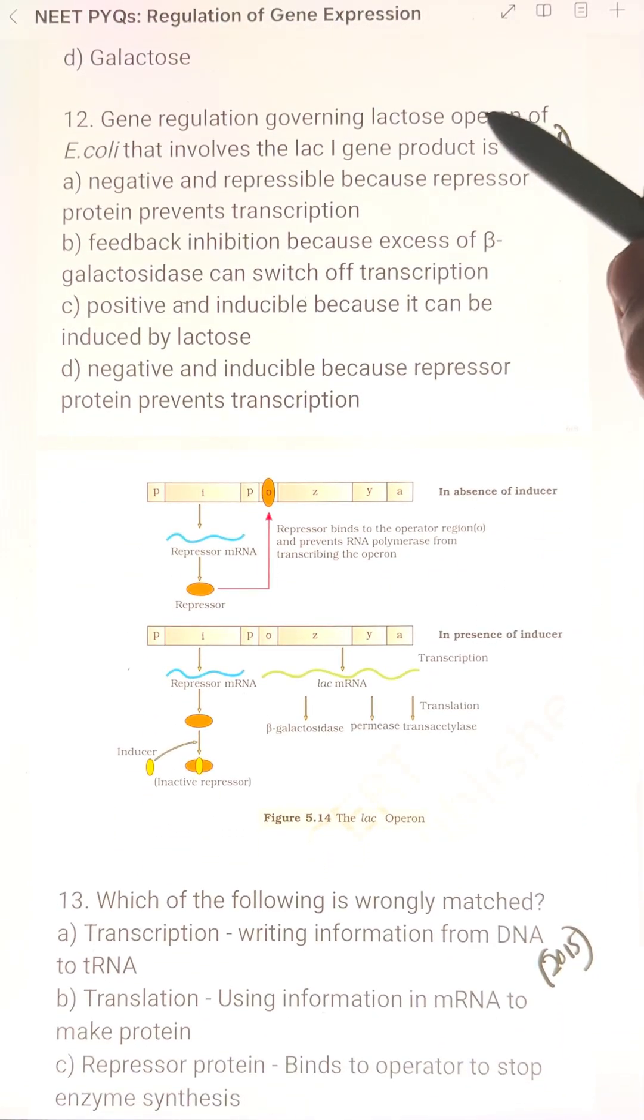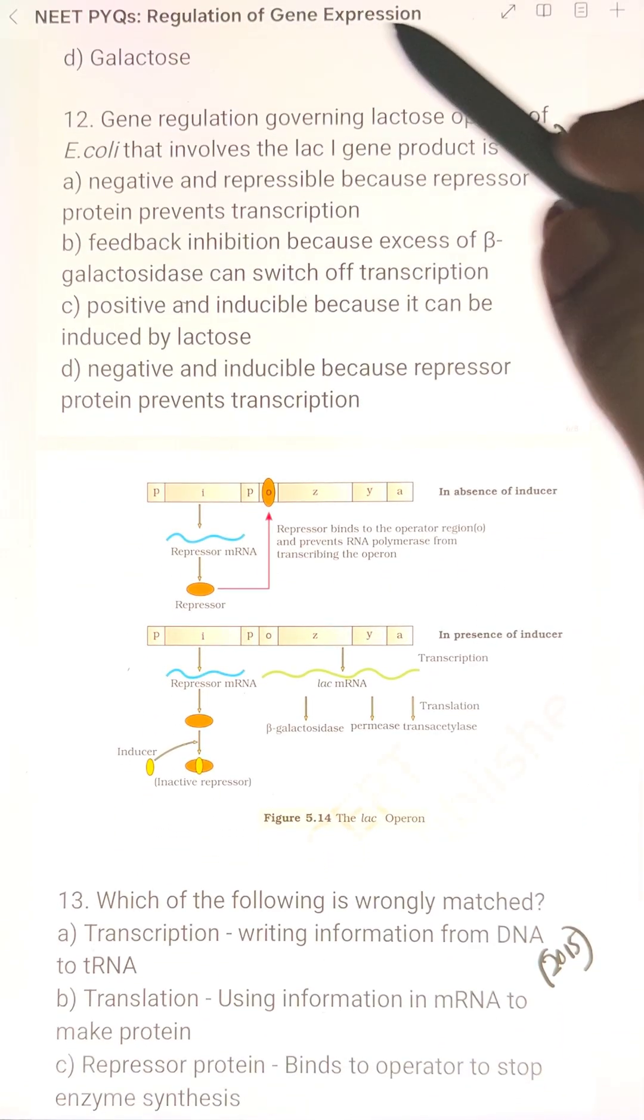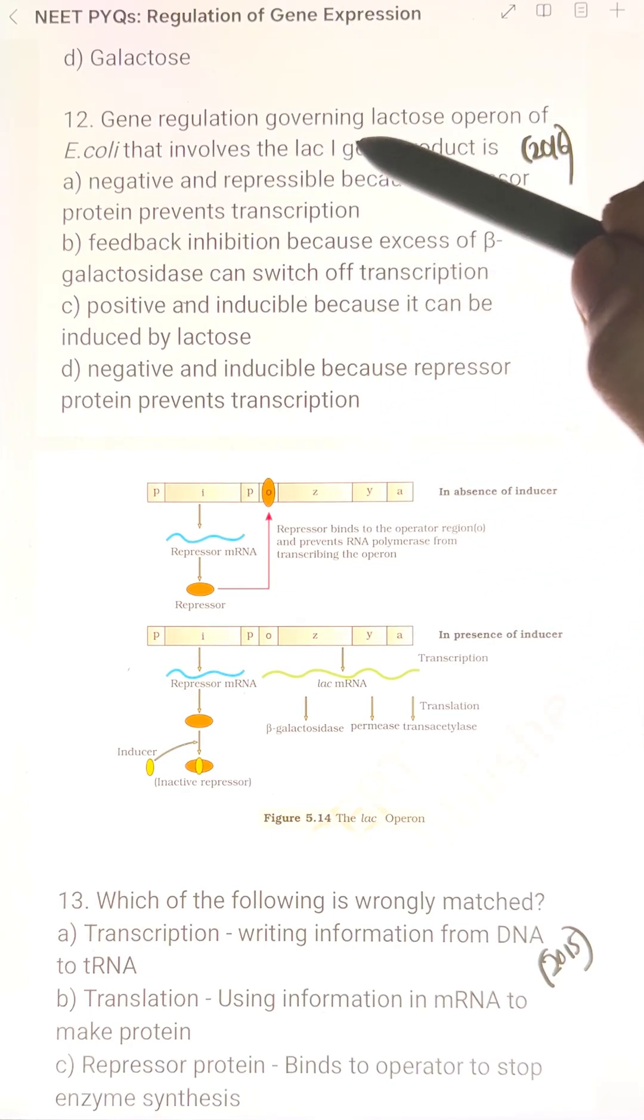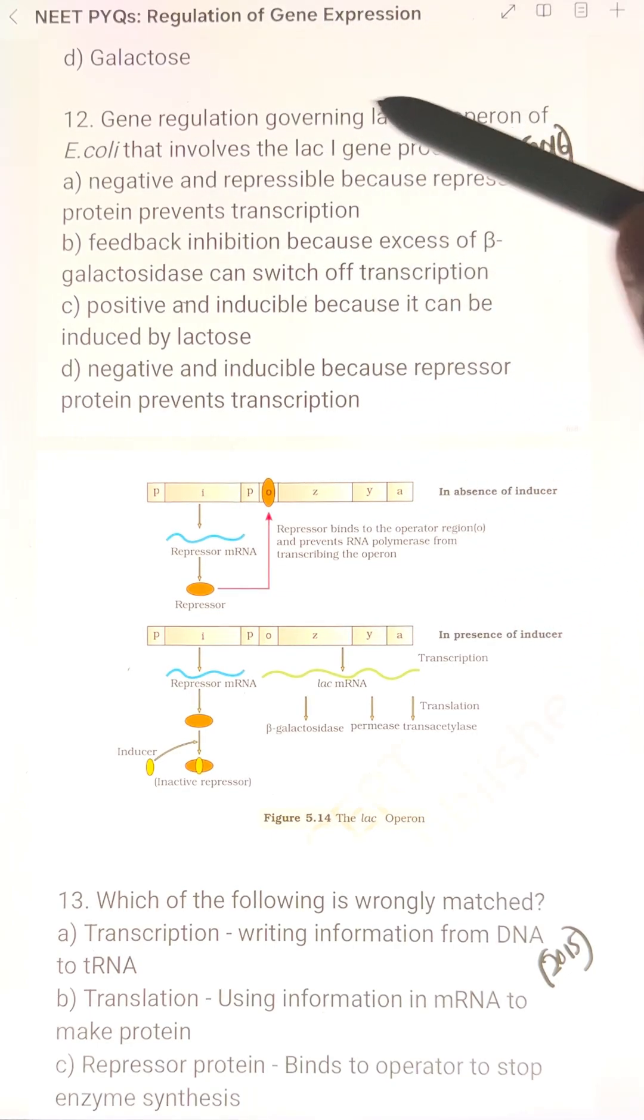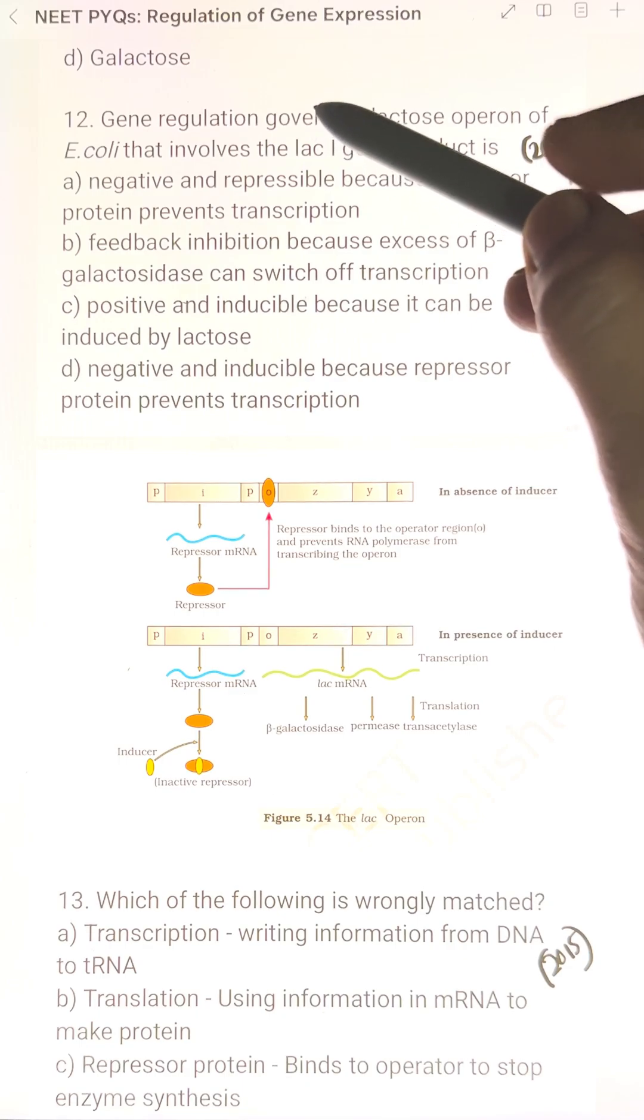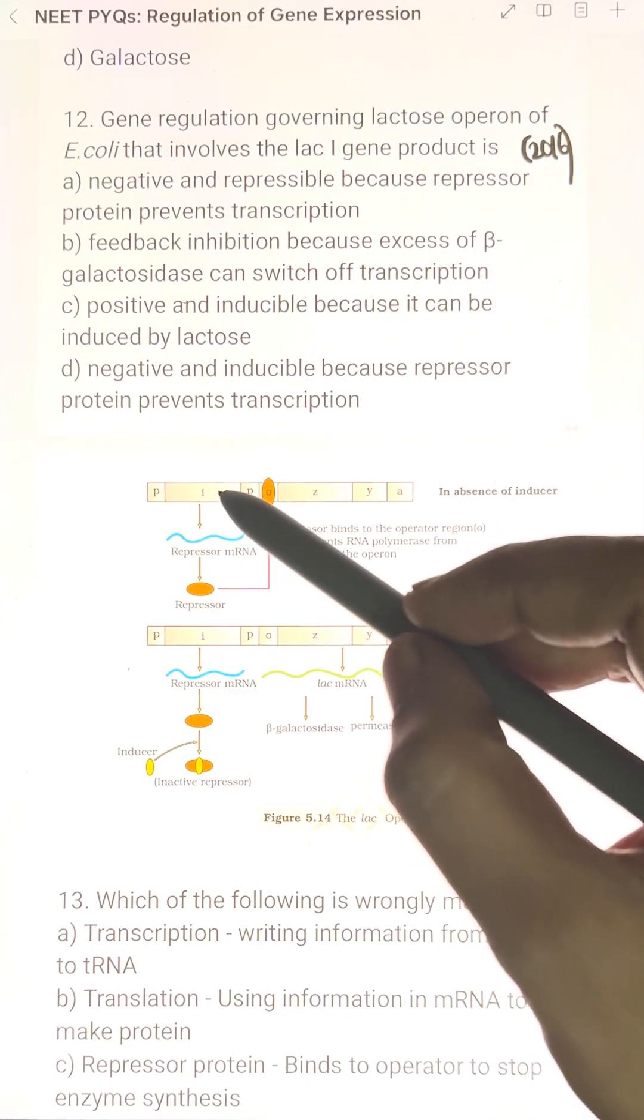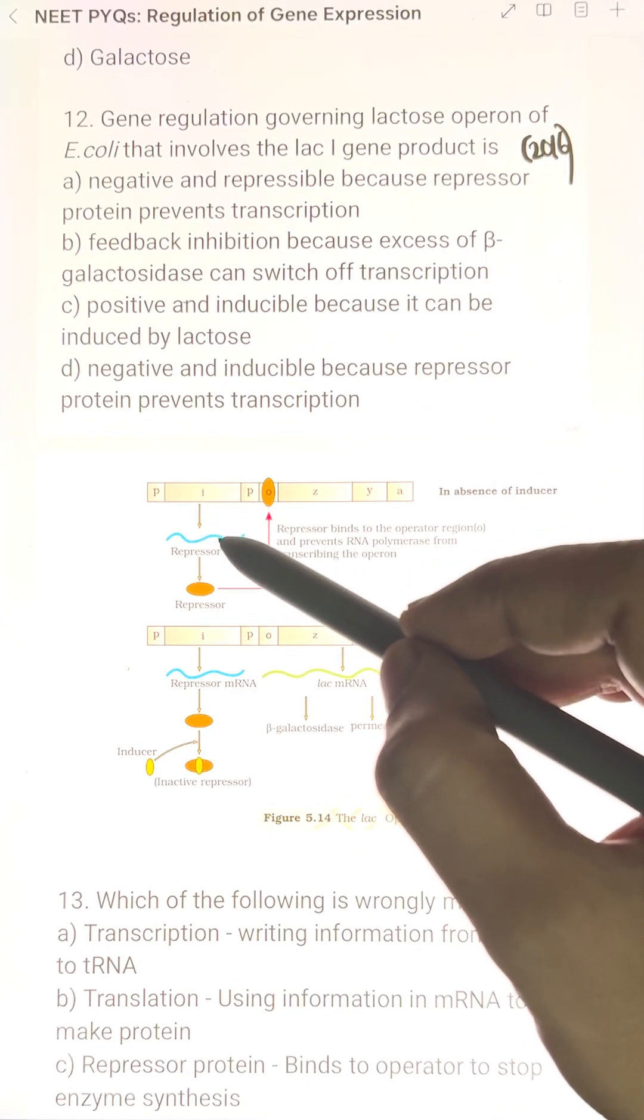Next question is gene regulation governing lactose operon of E. coli that involves the lac i gene product is? In gene regulation, it is a negative regulation. In the regulatory gene it is constitutively expressed.